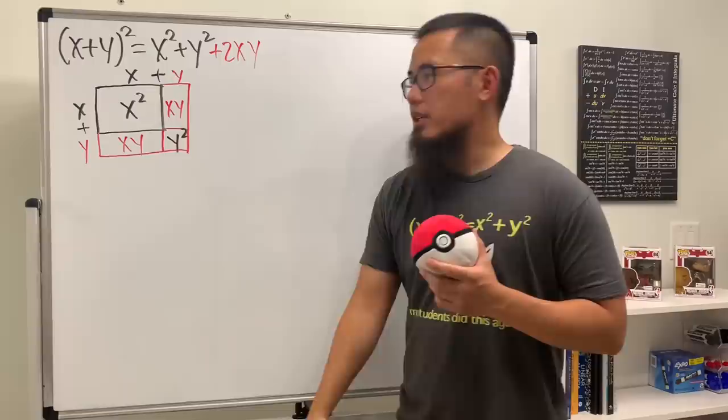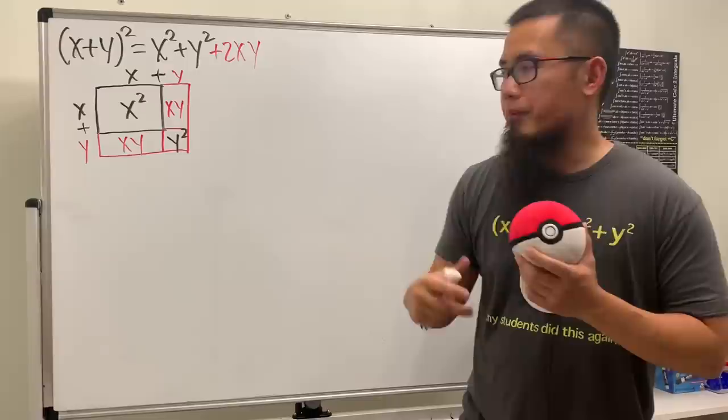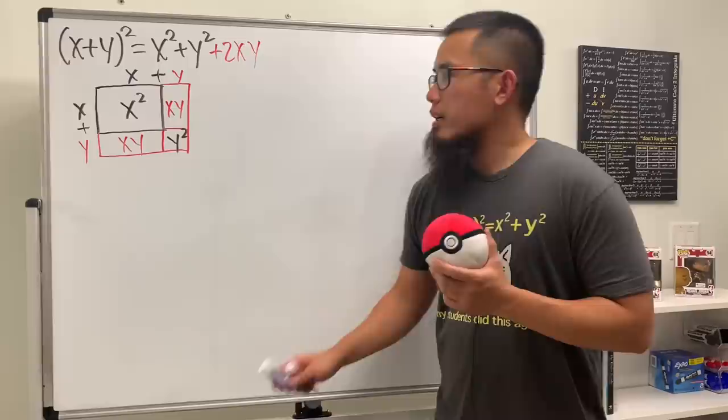And this is actually really cool, because we can actually use geometry to prove this identity. Although, this picture only works when x and y are positive numbers, right? But it's pretty cool already. Now, I have a question for you guys.